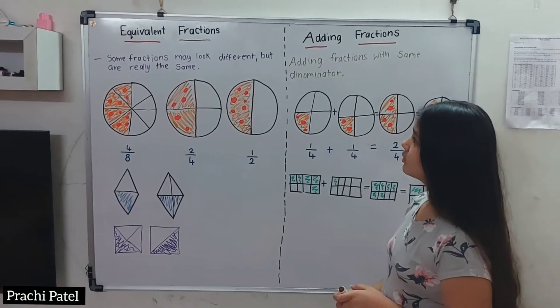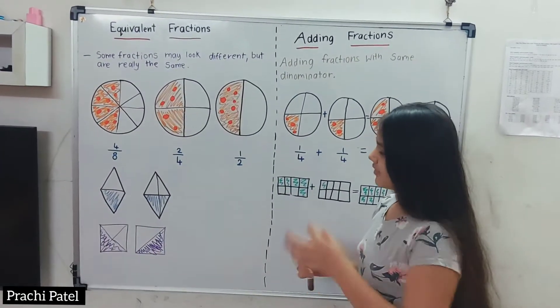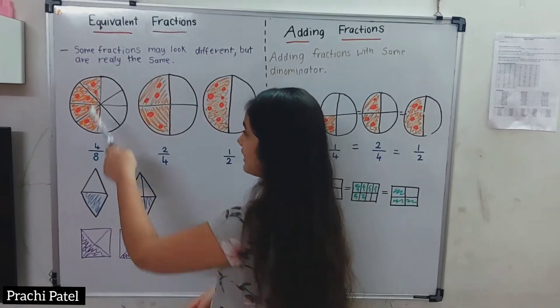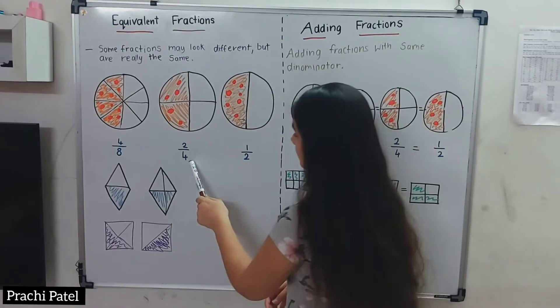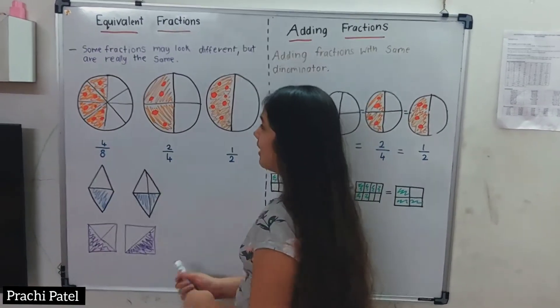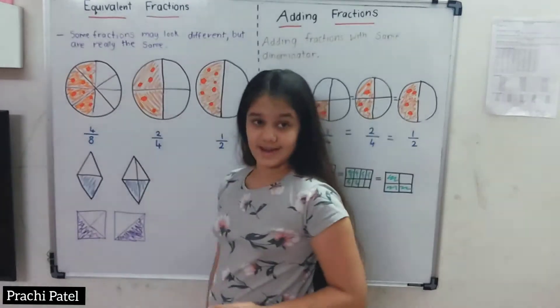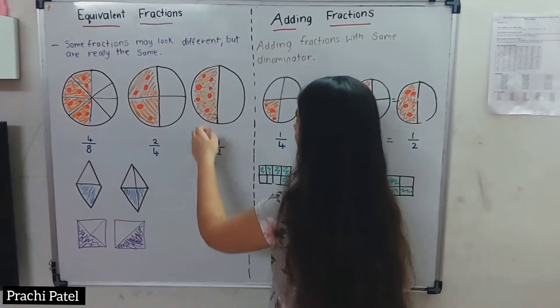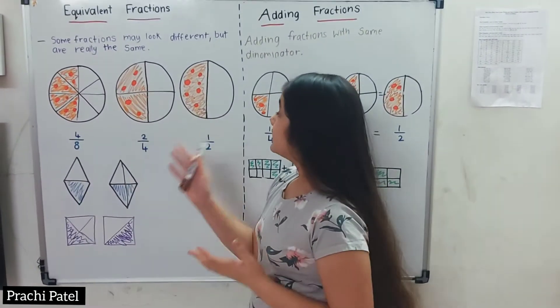Some fractions may look different but are really the same. For example, we have 8 pieces and 4 are eaten. Here we have 4 pieces and 2 are eaten, but it is exactly the same. Now here we have 2 parts and 1 part is eaten. These 3 fractions look the same.